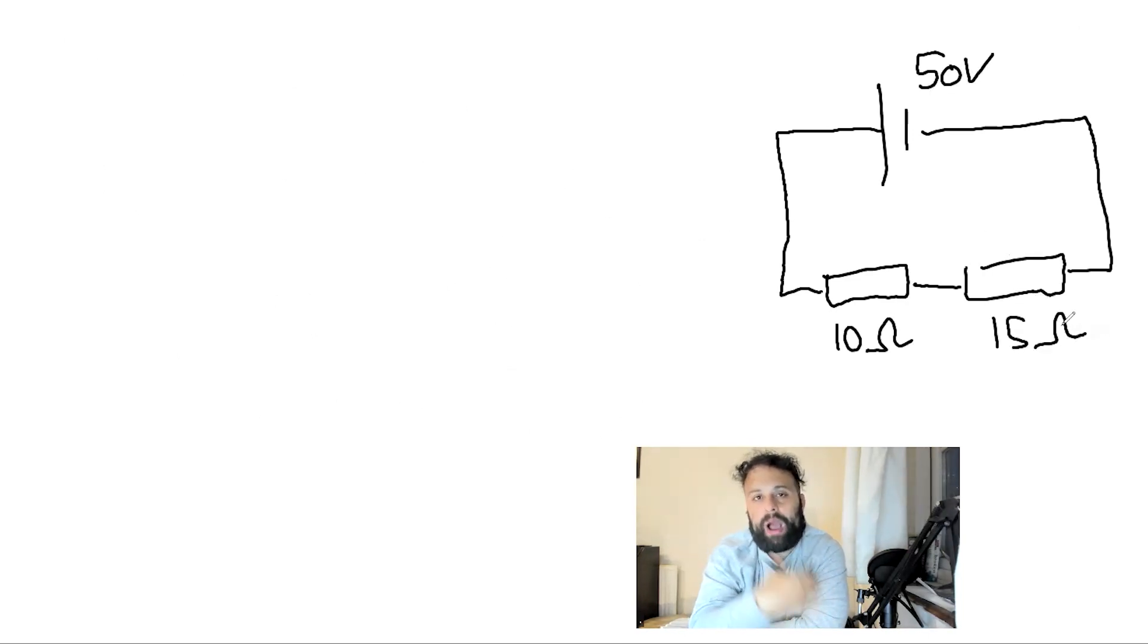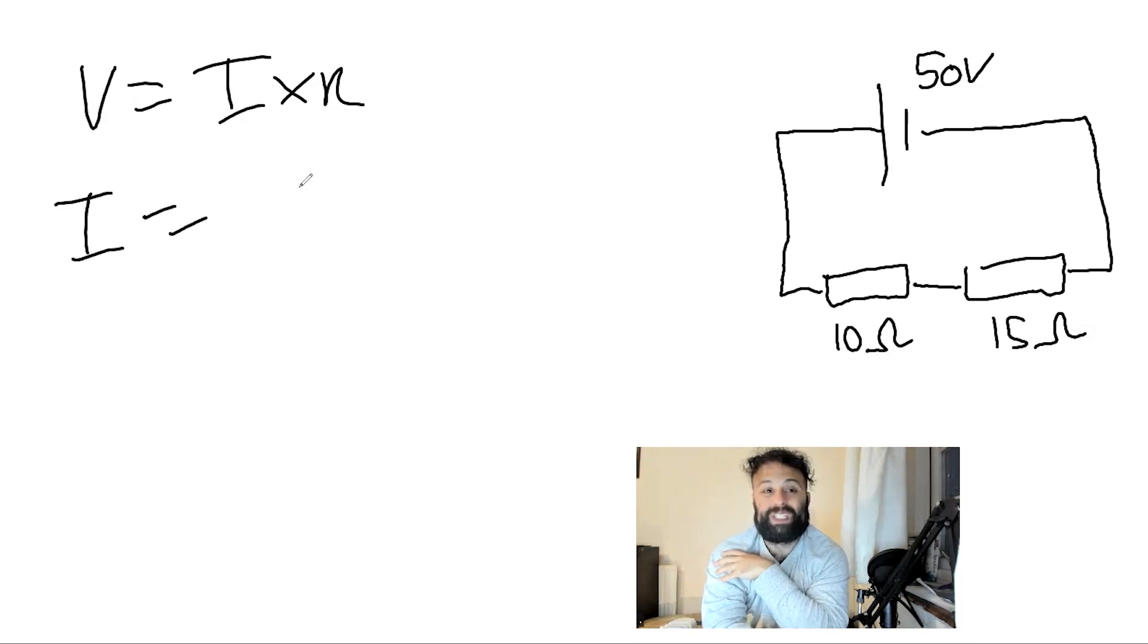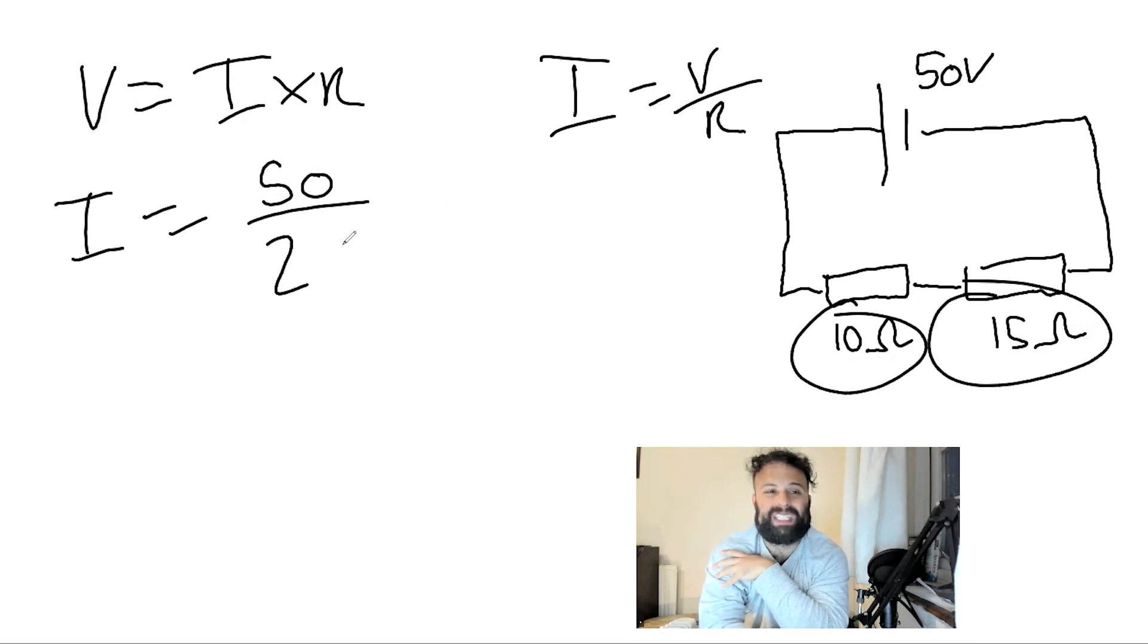Let's do this circuit, and we find out how much voltage goes through each section. So let's work out the current, which is the total voltage, which in this case is 50, divided by the total resistance. Current is voltage divided by resistance. So the total resistance is 10 plus 15, which is 25. So each one is getting 2 amps.